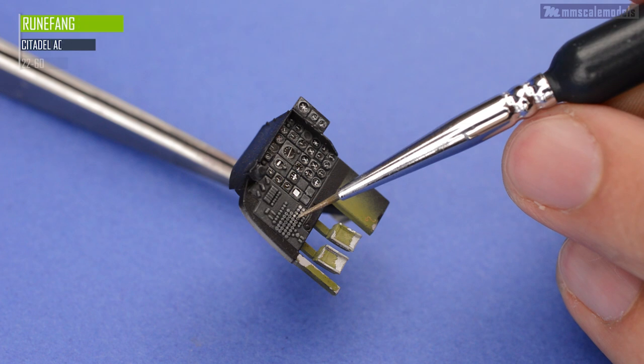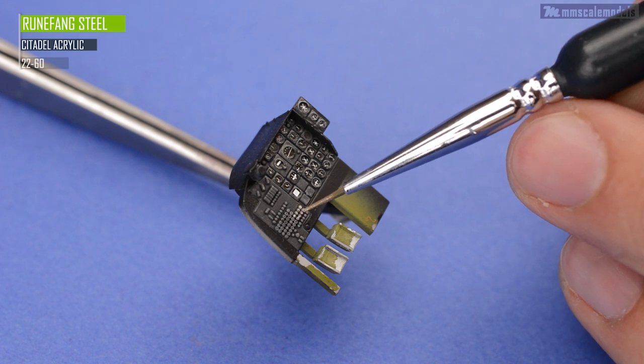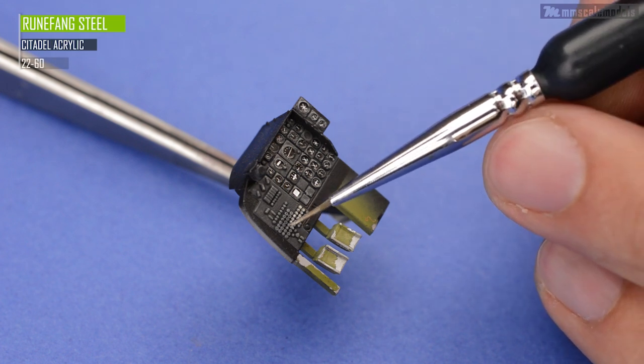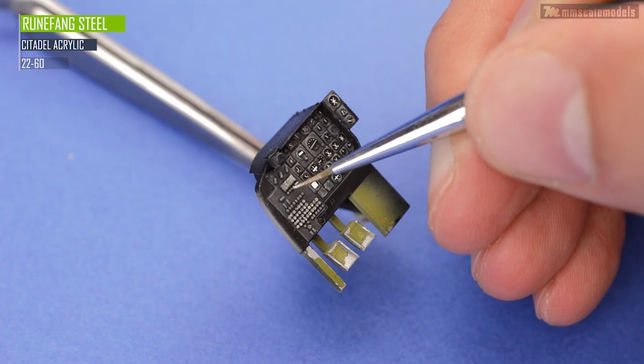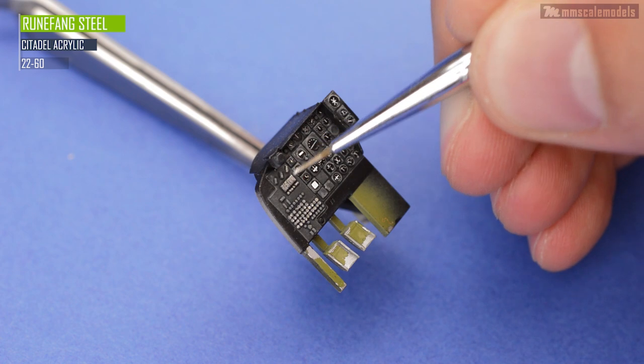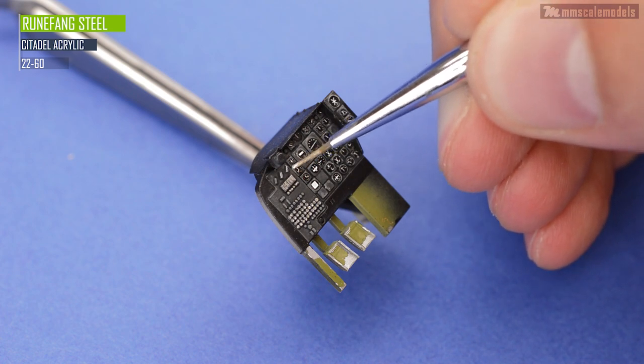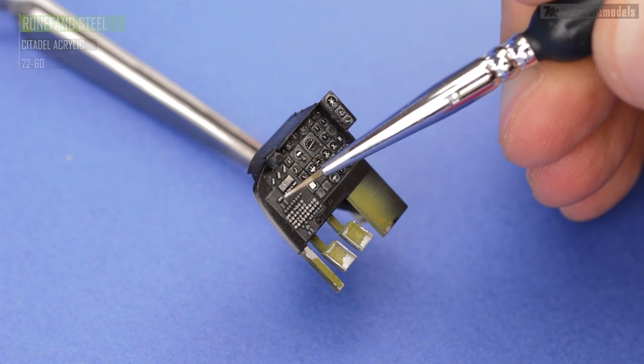Now let's turn our attention to the switchboard. Here we already have some nice definition going on but let's paint all switches with a similar base coat. Just on the top so we can preserve the outline from the black wash.